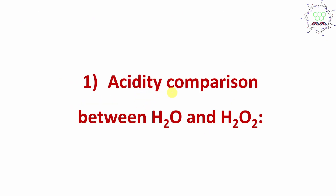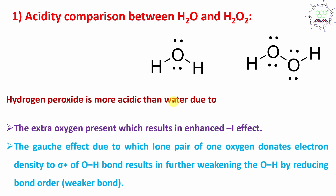The first point is acidity comparison between hydrogen peroxide and water. Between the two, H2O2 is the stronger acid. Why? Because it has one additional oxygen which displaces a negative inductive (-I) effect. Not only that, the lone pair of one oxygen is donated into the sigma-star (σ*) of the O-H bond, which results in weakening of that O-H bond and ultimately shows higher acidity compared to water.